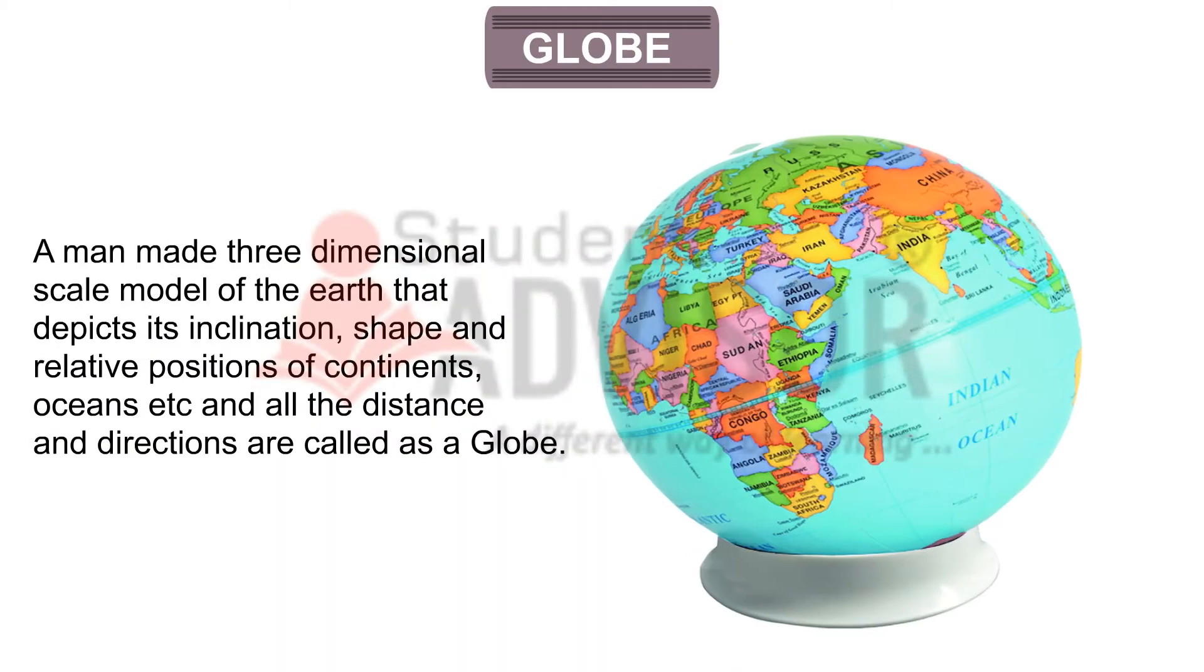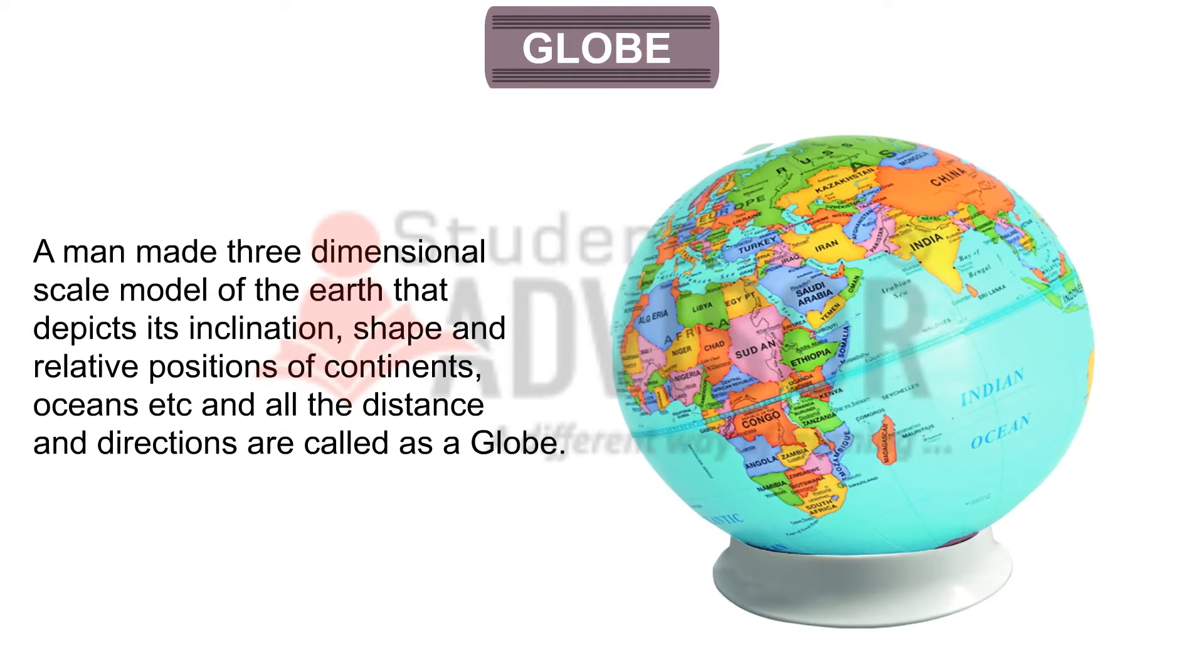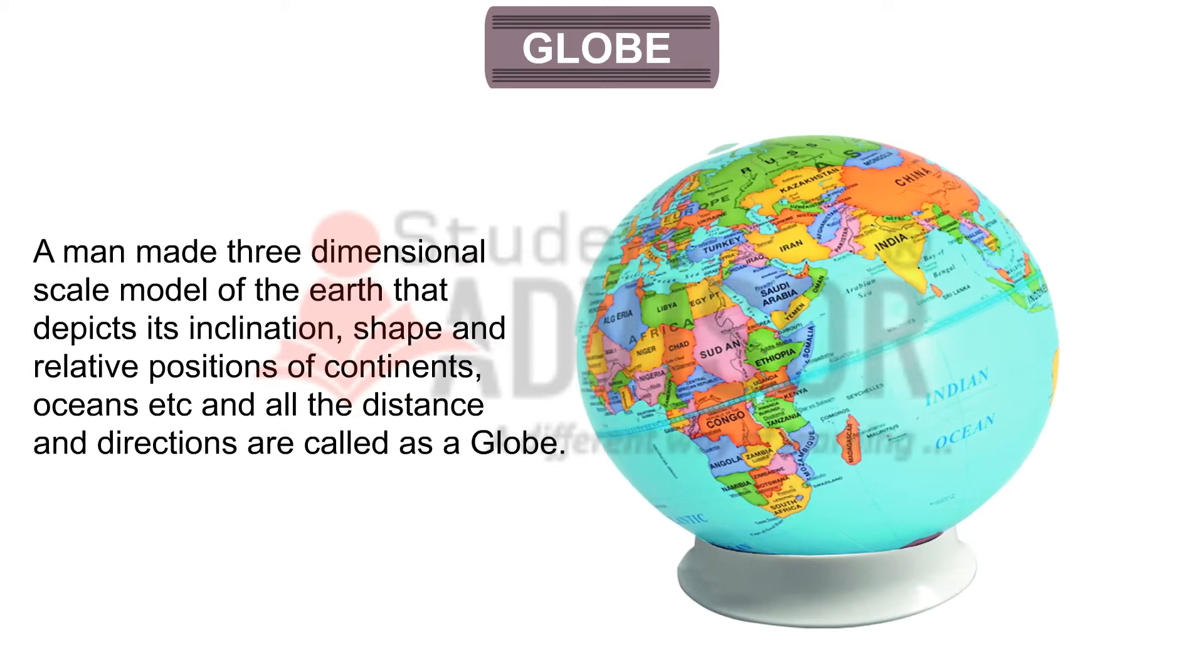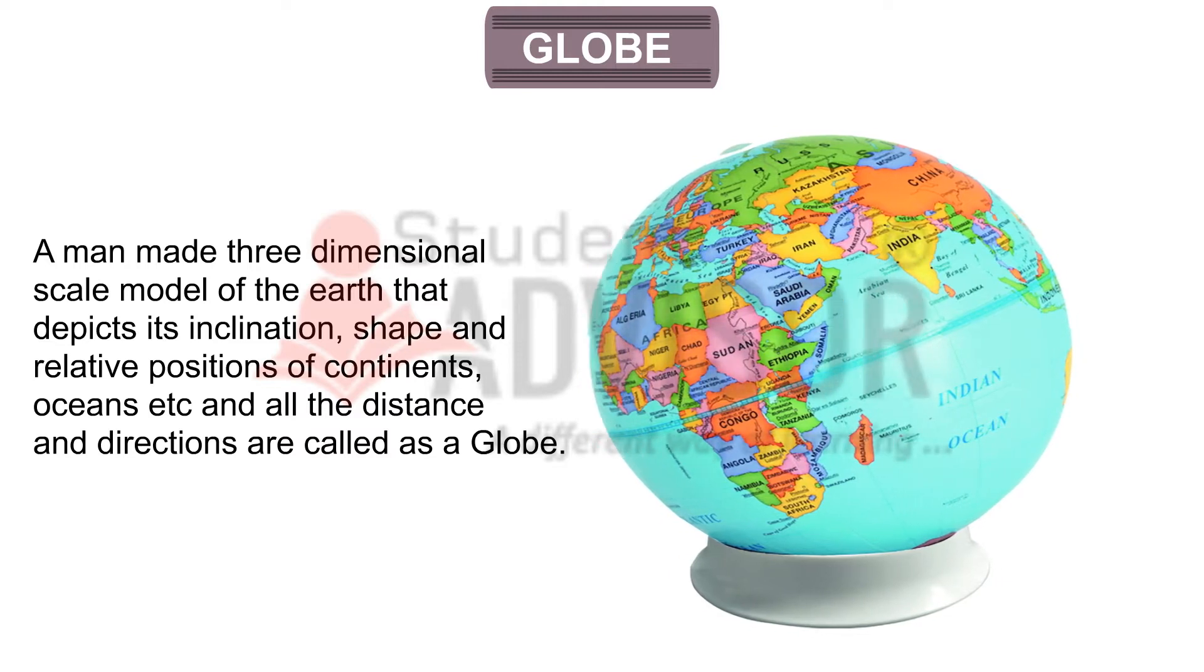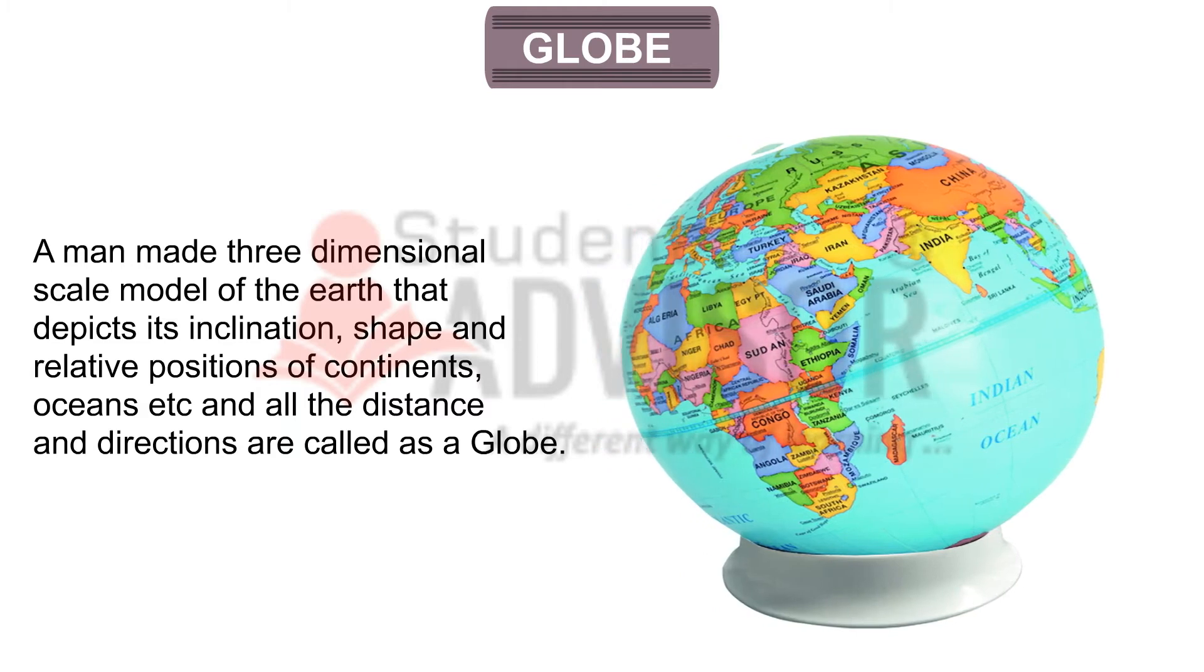A man-made three-dimensional scale model of the Earth that depicts its inclination, shape and relative positions of continents, oceans, and all the distance and directions is called as globe.